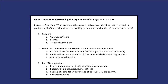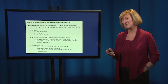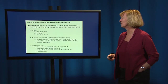We'll look at the code structure from Peggy's study. It's very hierarchical — it looks like an outline you might do for a research paper. The code structure is labeled 'Understanding the Experiences of Immigrant Physicians.' It's really important to embed the research question right into the code structure. This helps the team remember where they're going and what the target research question is, protecting against drifting off on interesting new developments that aren't exactly relevant. Her question: what are the challenges and advantages that international medical graduate physicians face in providing patient care in the U.S. healthcare system?